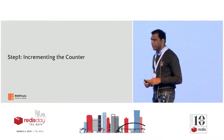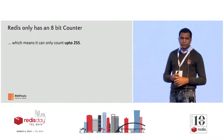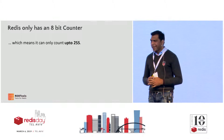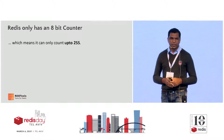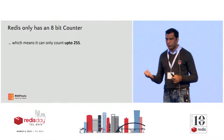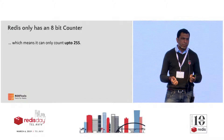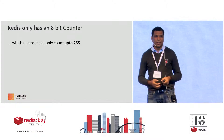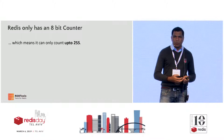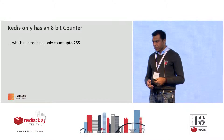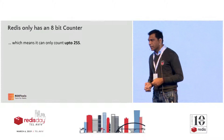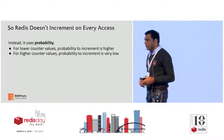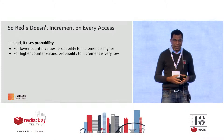Looking at the internal Redis data structures, Redis only has a counter of eight bits. If you want to track the frequency of a key, you only have eight bits, which means you can only count up to 255. That's not a lot for real-world use cases where keys are accessed much more frequently. So Redis uses a trick — it doesn't count on every key access. It uses a probabilistic algorithm.